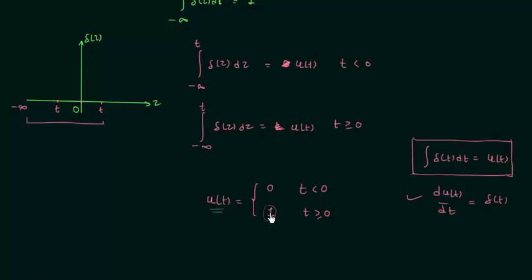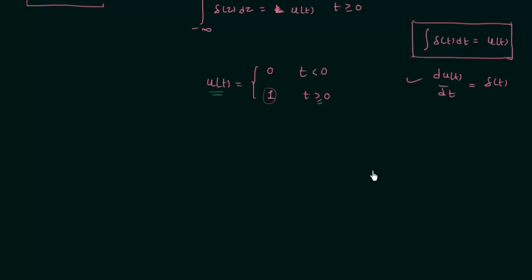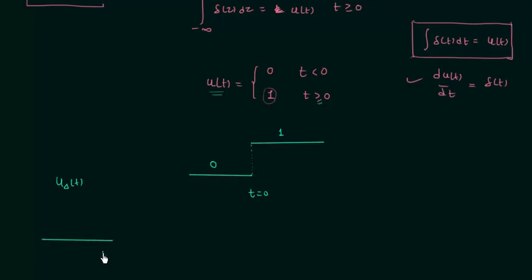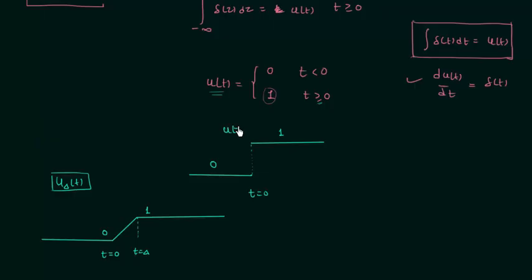We assumed u(t) is equal to 1 when time t is equal to 0, but in reality the signal is discontinuous at time t equal to 0. The waveform of unit step signal is discontinuous at t = 0, going from 0 to 1. Now I will consider a signal u_δ(t), which is equal to 0 till time t equal to 0, then it starts to rise linearly till time t equal to δ, and after that it is equal to 1. This signal is u_δ(t).